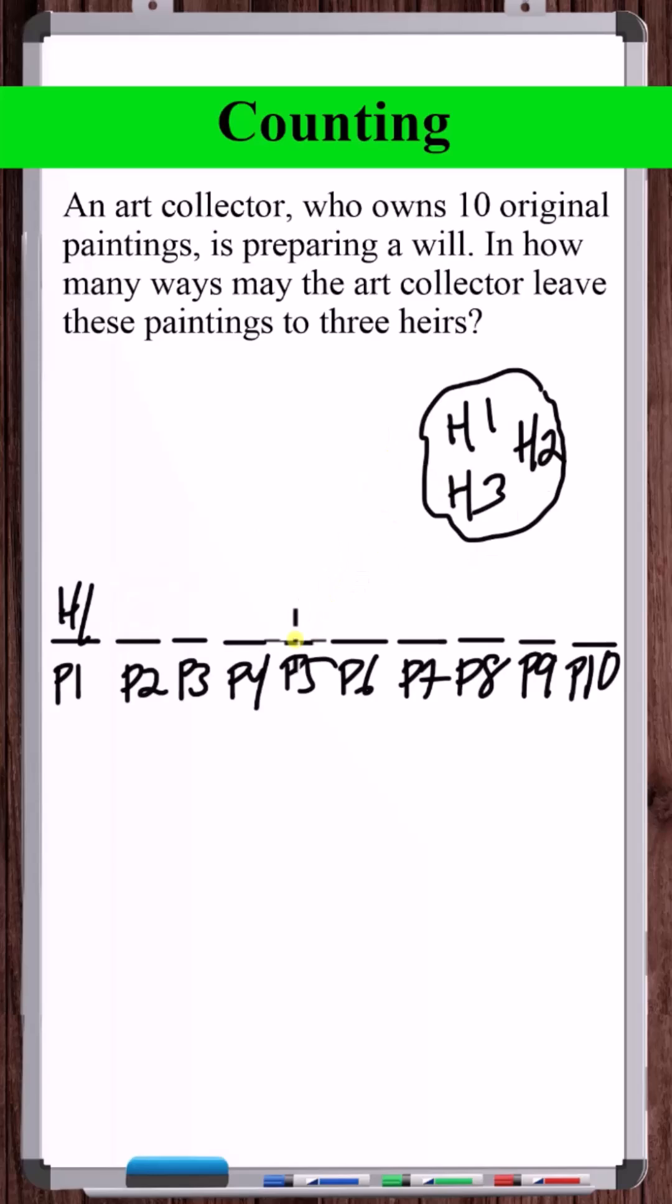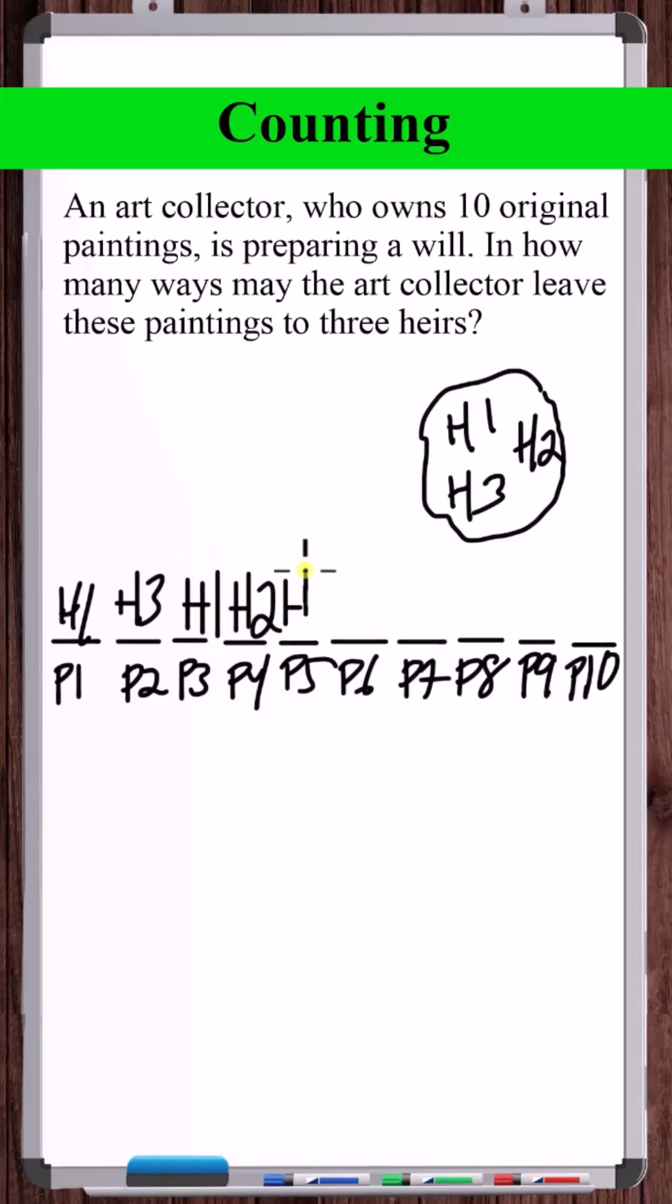But do we want to do permutations or maybe combinations with repetition? And will either one of those setups even work here? If we gave heir one painting one, heir three painting two, heir one here, something like that. Do we want to count reorderings? If we don't, then we want to do combinations with repetition here.